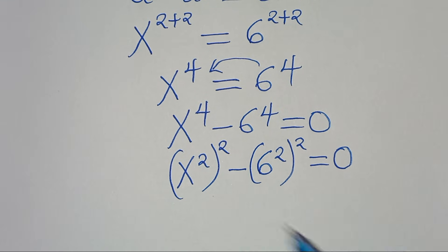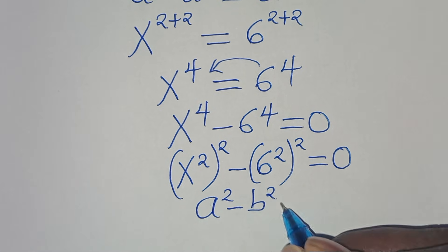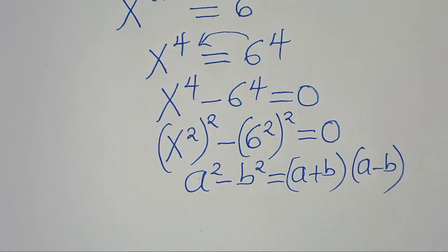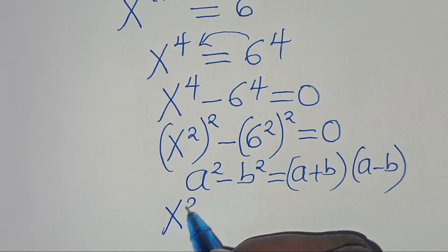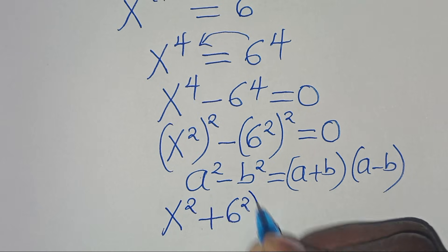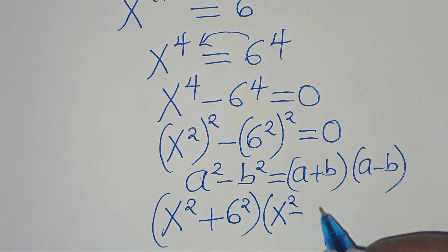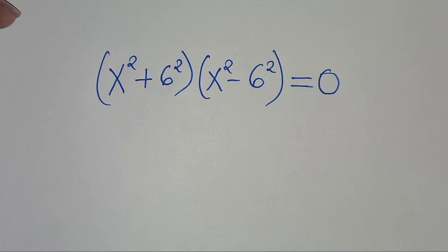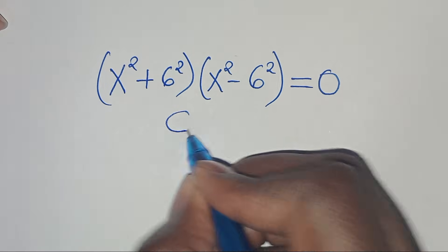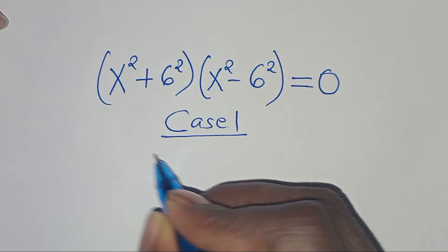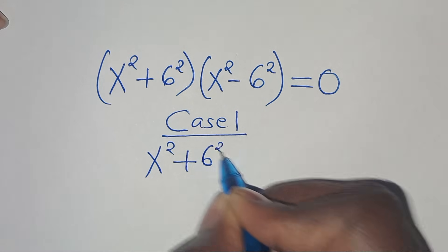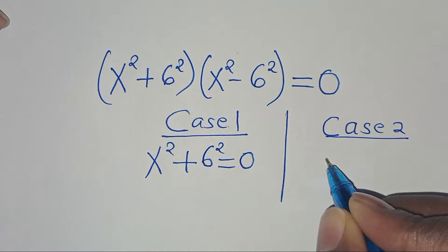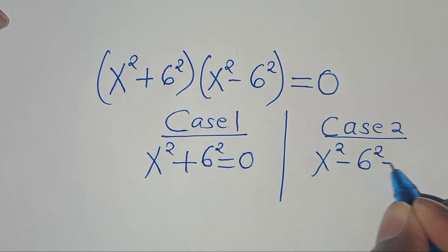Now this equation is of the form a squared minus b squared, which we can express as a plus b multiplied by a minus b. Applying this property, we have x squared plus 6 squared, multiplied by x squared minus 6 squared, equals 0. So in Case 1 we have x squared plus 6 squared equals 0, and in Case 2 we have x squared minus 6 squared equals 0.